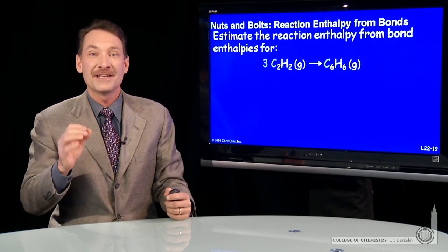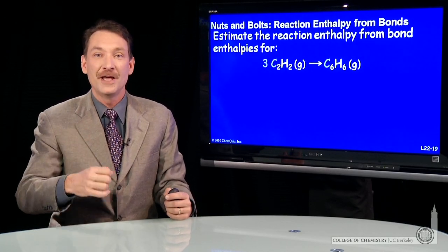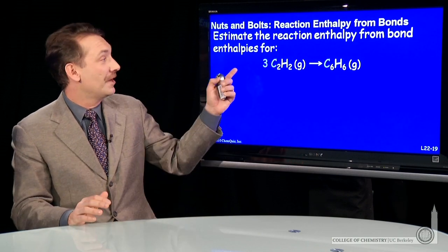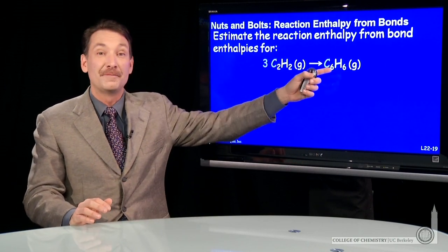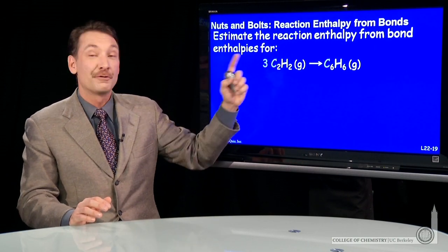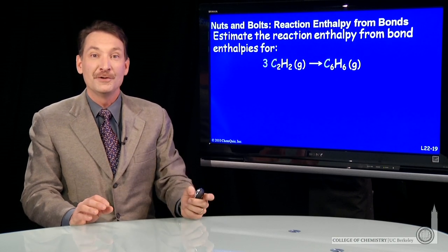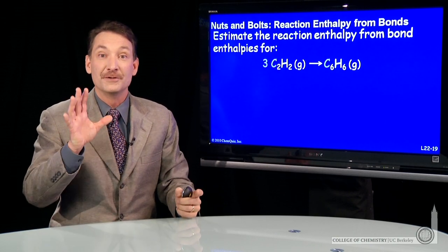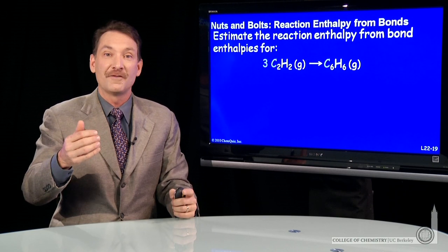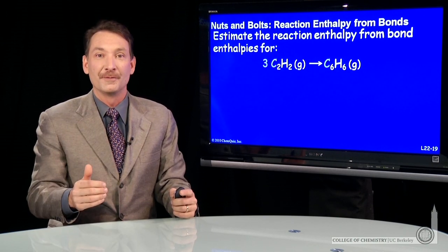Let's do a calculation where we estimate the enthalpy of a chemical reaction using bond enthalpies — specifically the formation of benzene from three moles of acetylene. When we do these, we use bond enthalpies, so we'll think of all the bonds that are broken and all the bonds that are formed.